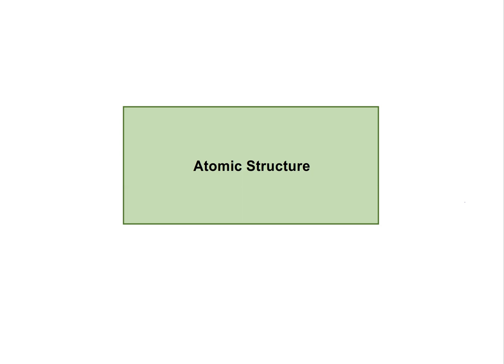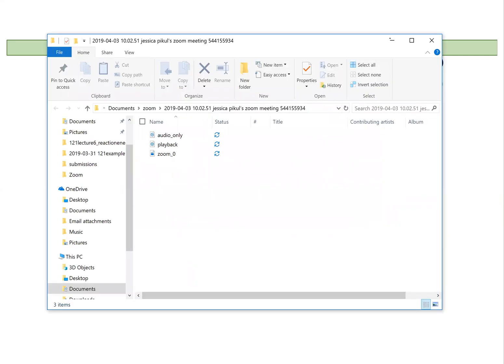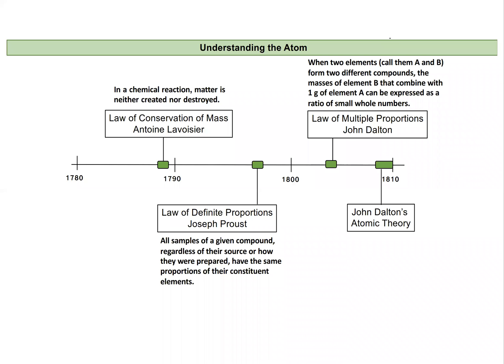In this video we will review atomic structure. Our modern understanding of atomic structure really began at the turn of the century around 1800. At this time there were a number of laws that developed out of research that built up to Dalton's atomic theory. We had the law of conservation of mass, which states that in a chemical reaction matter is not destroyed or created.